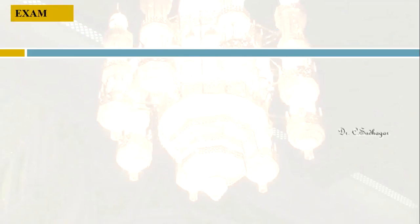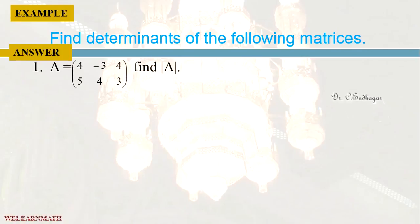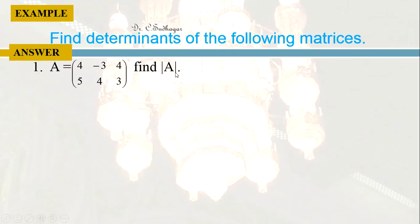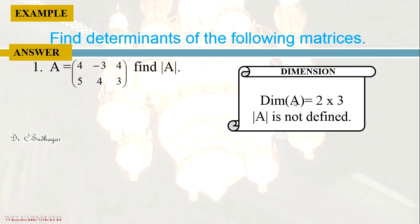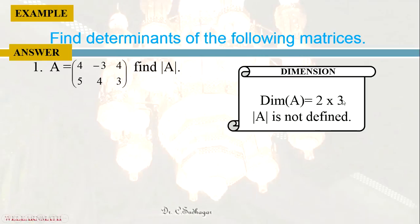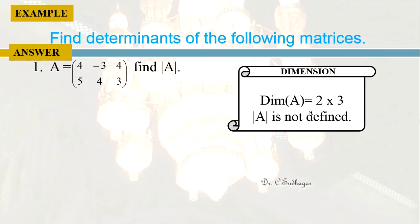Let us take some example problems. Find the determinant value of the following matrices. Take the first matrix A equal to [4, -3, 4; 5, 4, 3]. This matrix has 2 rows and 3 columns, so it is a 2×3 matrix. The number of rows is not equal to the number of columns, so it is not a square matrix. Therefore, the determinant of A is not defined — it is not possible to find the determinant value.